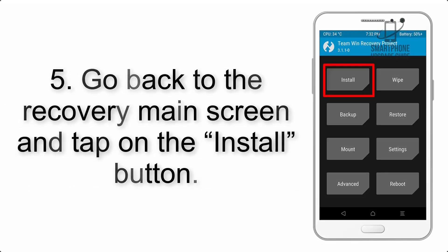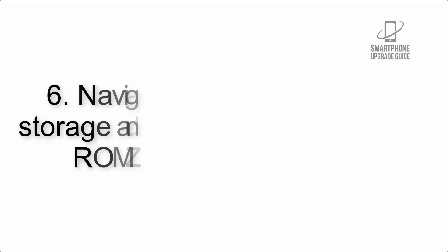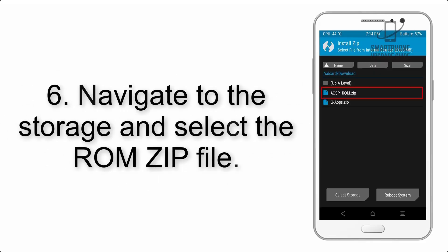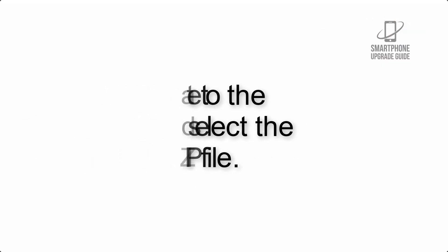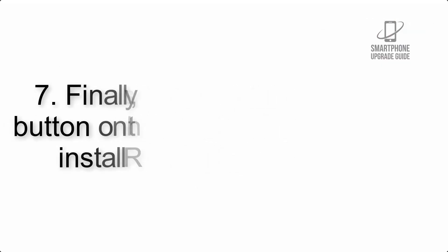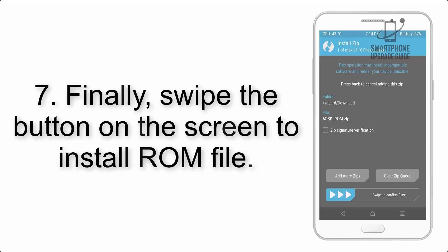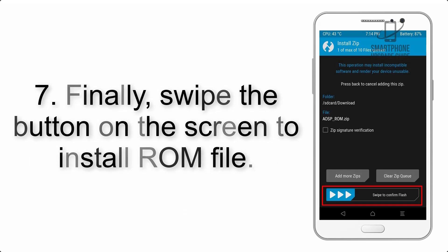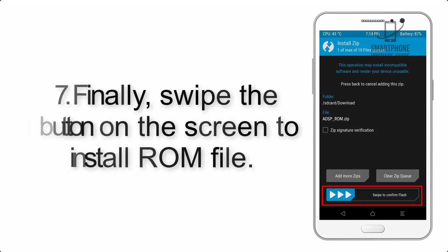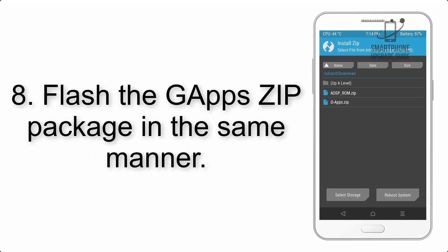Step 5: Go back to the recovery main screen and tap on the Install button. Step 6: Navigate to the storage and select the ROM zip file. Step 7: Finally, swipe the button on the screen to install the ROM file.